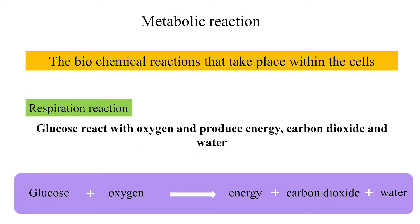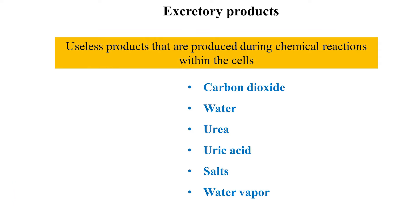Biochemical reactions that take place in the human body are known as metabolic reactions. They can be further classified as anabolic reactions or catabolic reactions. For example, in respiration, human cells take glucose and oxygen to produce energy. Carbon dioxide and water are the unnecessary products of respiration.